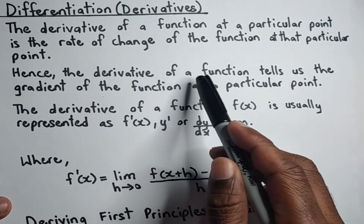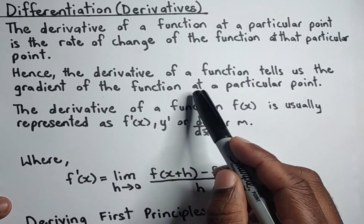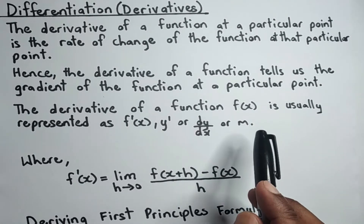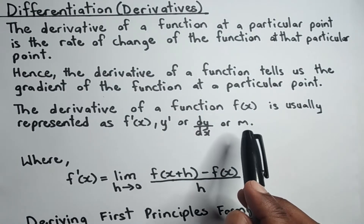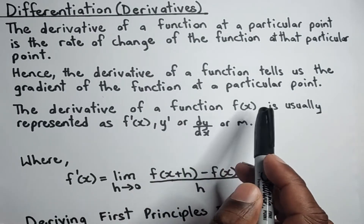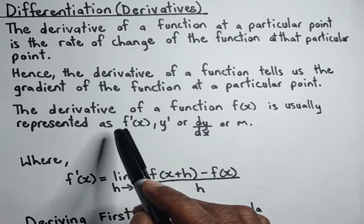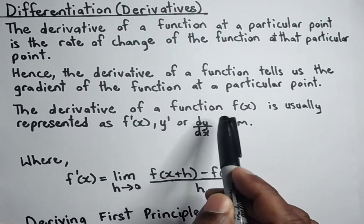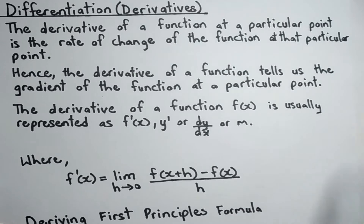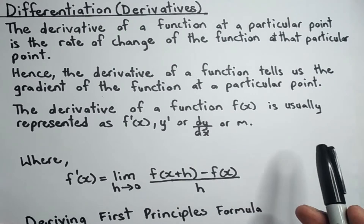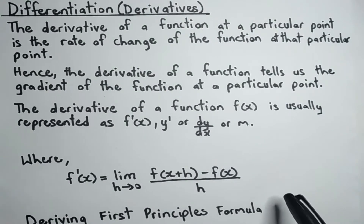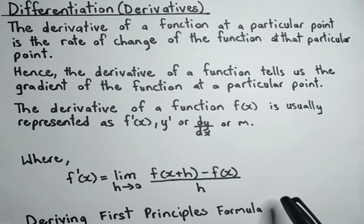The derivative of a function tells us the gradient of the function at a particular point. So when you differentiate a function, you obtain the gradient of that function. The derivative of f of x is usually represented as f prime of x, y prime, dy by dx, or m. You would have been used to m from high school — m represents the gradient, even in the equation of a straight line y equals mx plus c, where m is the gradient.